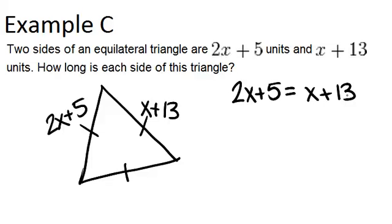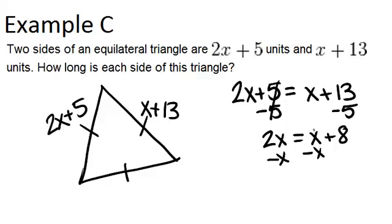So we can make this equation and then solve it in order to solve for x, and then we'll be able to find how long the sides are for the triangle. So first I'm going to minus 5 from both sides, and get 2x equals x plus 8, then minus x, and I get x equals 8.